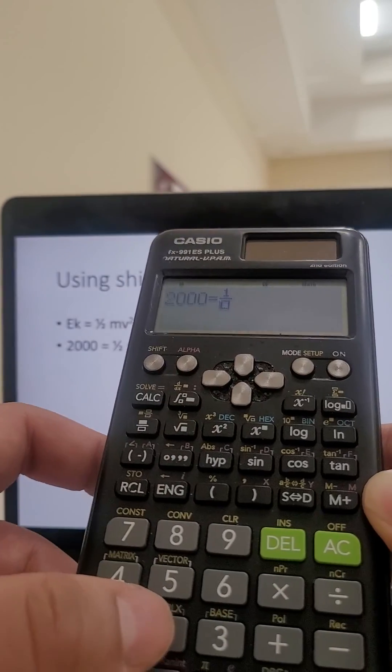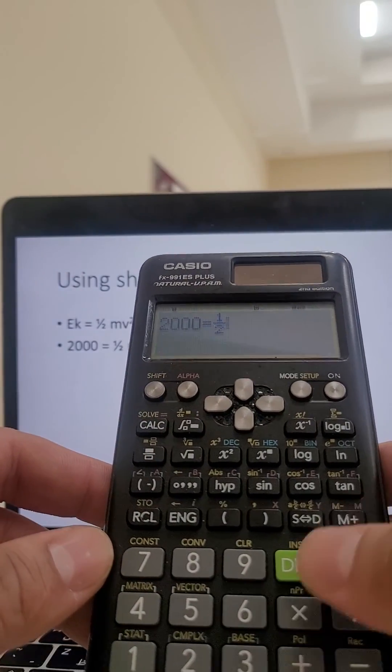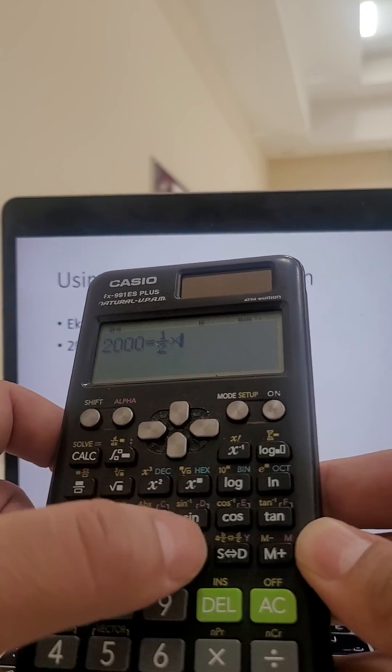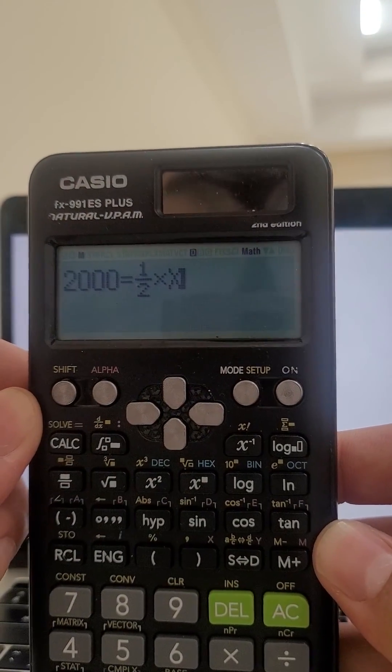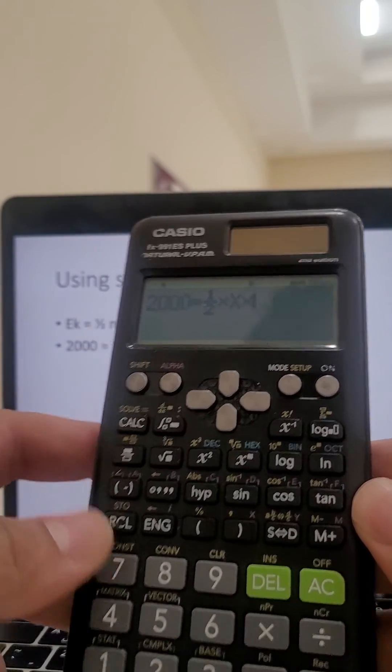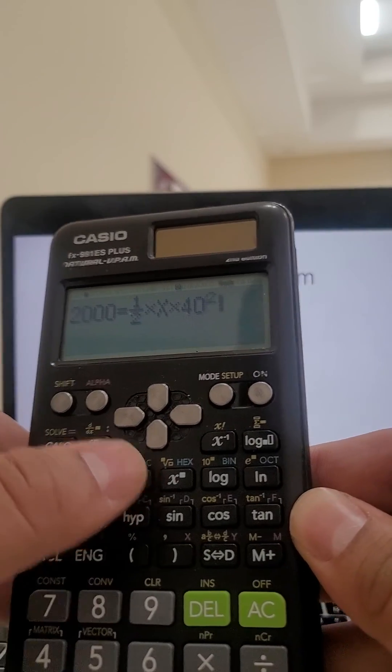A half multiplied by m. That is the variable I need. So I'll do alpha x. That is what I'm trying to find. Multiply that by 40 squared.